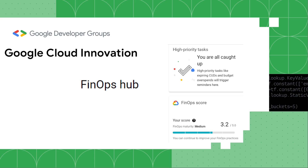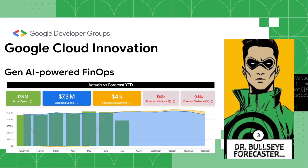In the FinOps area, there's something new called FinOps Hub where you can get recommendations and a score for how well your company is doing on FinOps. The industry average is around 2.4, which is pretty poor — we have a lot of room to improve. AI is now coming to FinOps: there's an AI-powered recommendation tool called the Bullseye Forecaster, and forecasting is now AI-enabled, giving you more accurate budgeting and forecasting, which is one of the harder parts of FinOps.